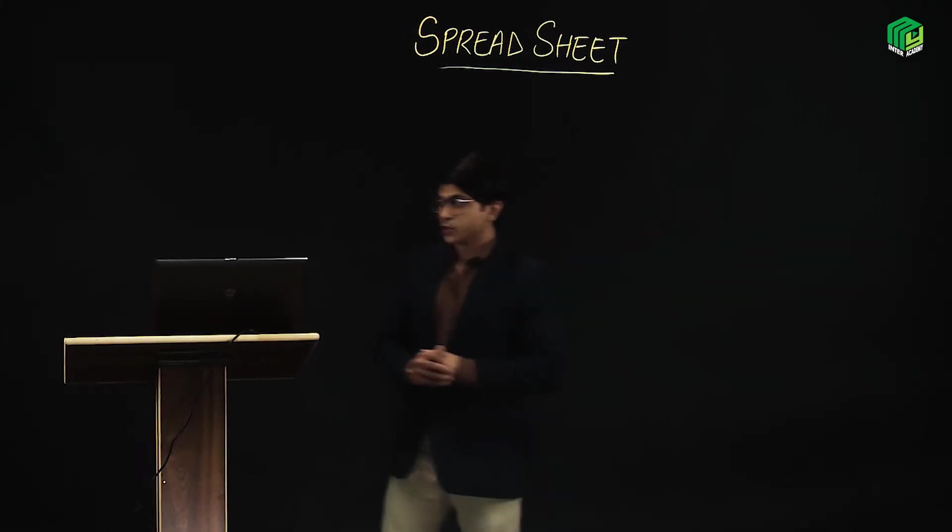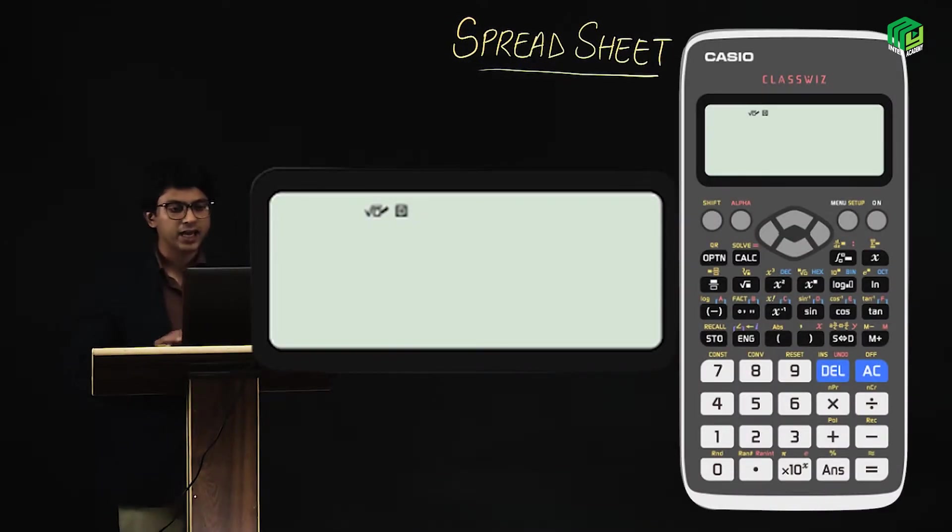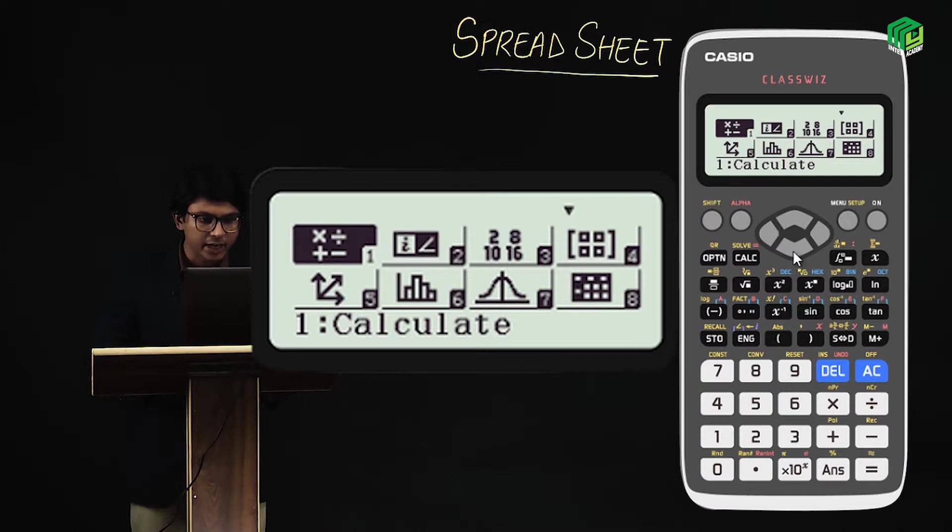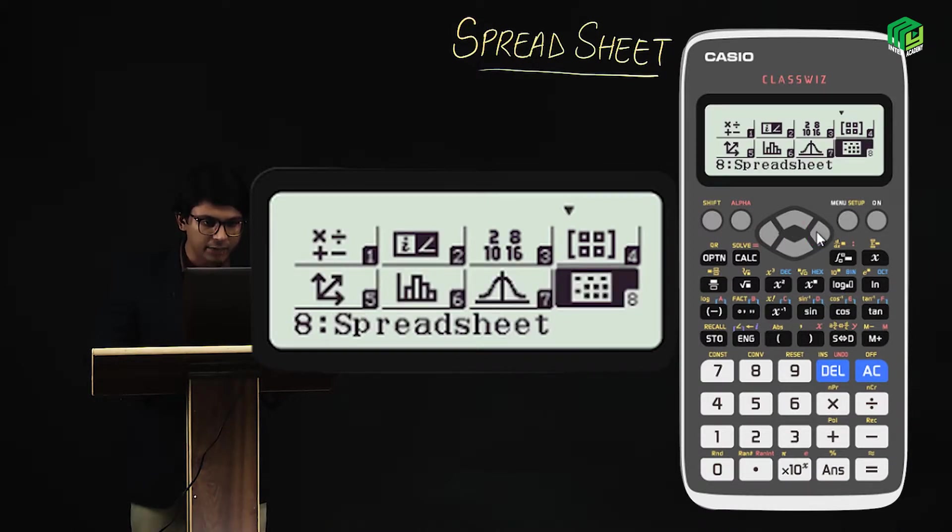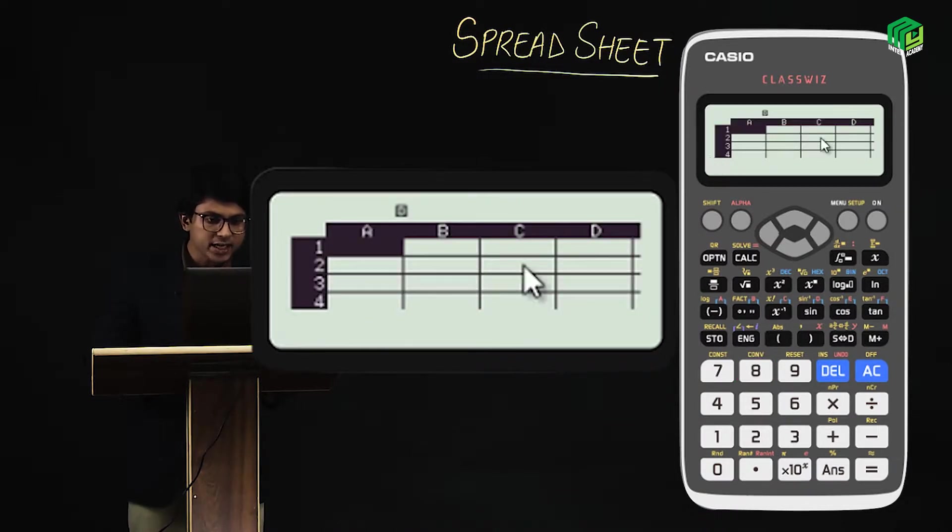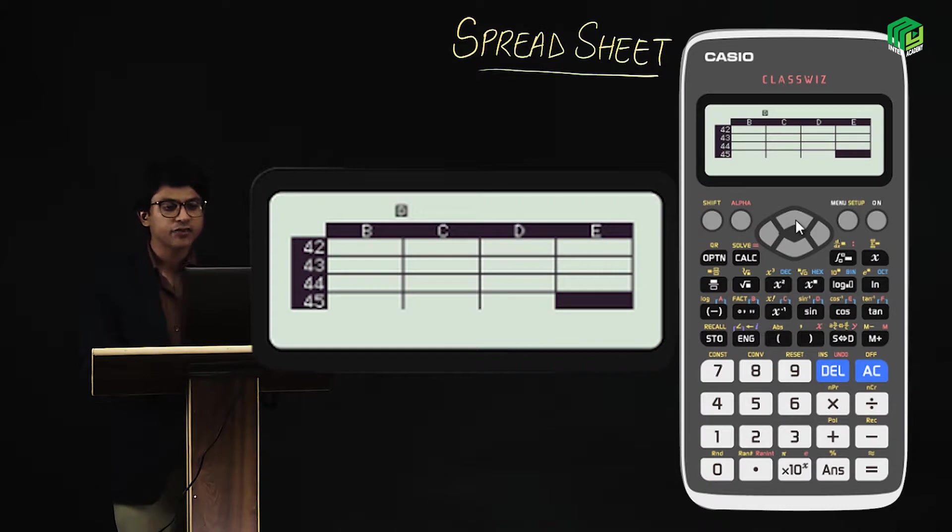We have the calculator here, and we have the calculator display here. Now we have to see what to do because we need spreadsheet. We need to go to the menu button, then scroll down. You can see spreadsheet here, so press 8. This way you have some cells, and this way you have some cells. This way you have a total of 5 columns, and a total of 45 rows all the way from 1 to 45. So 45 into 5 cells is 225 cells - 45 rows and 5 columns.